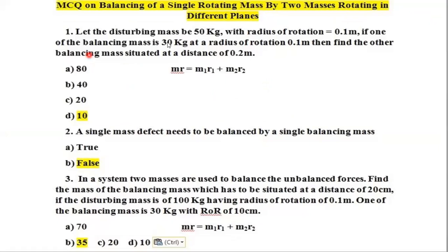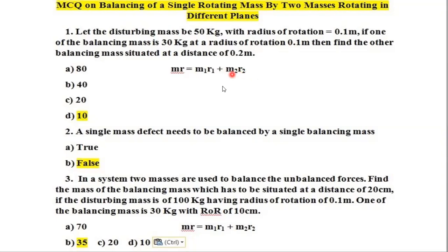First question: the disturbing mass is 50 kg, radius is 0.1 meter. If one of the balancing masses is 30 kg at a radius of rotation 0.1 meter, find the other balancing mass situated at a distance of 0.2 meter. The formula is MR = M1R1 + M2R2. Substituting M=50, R=0.1, M1=30, R1=0.1, R2=0.2, we solve for M2 and get M2 = 10 kg.